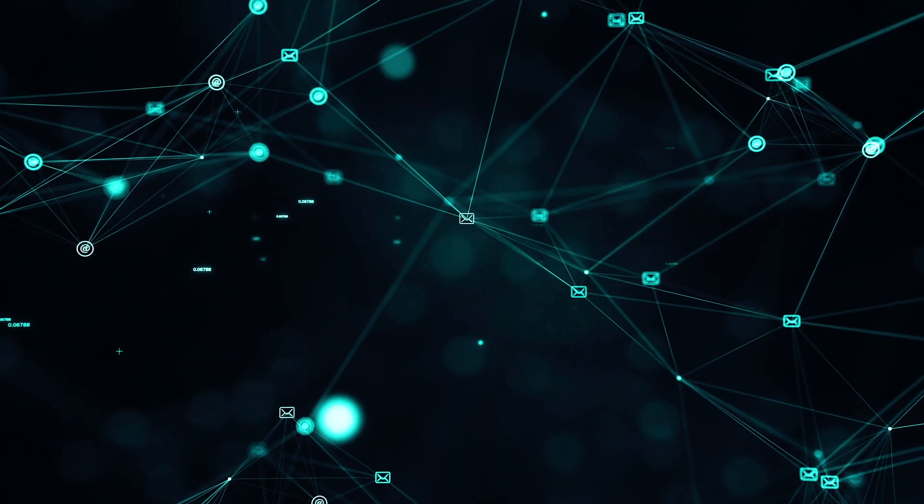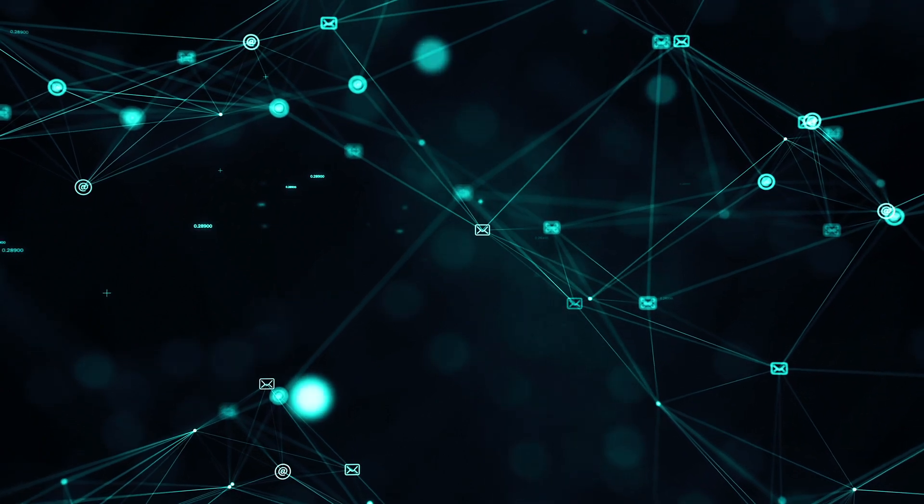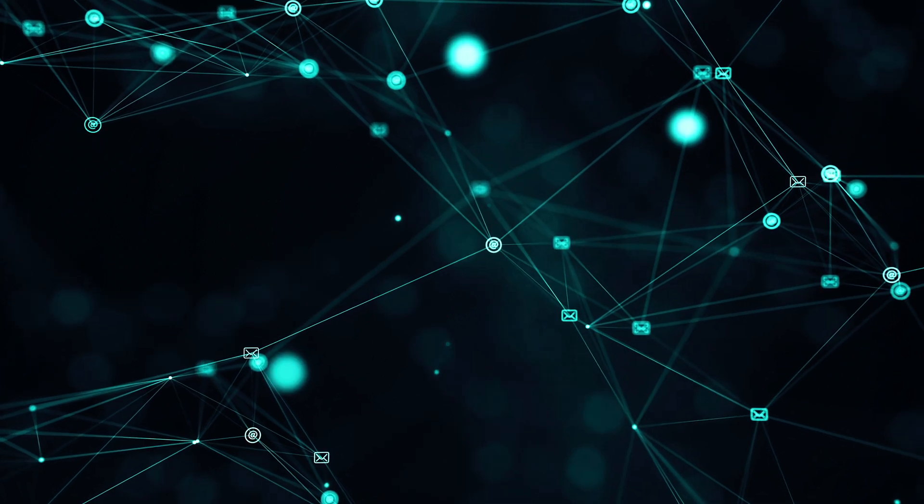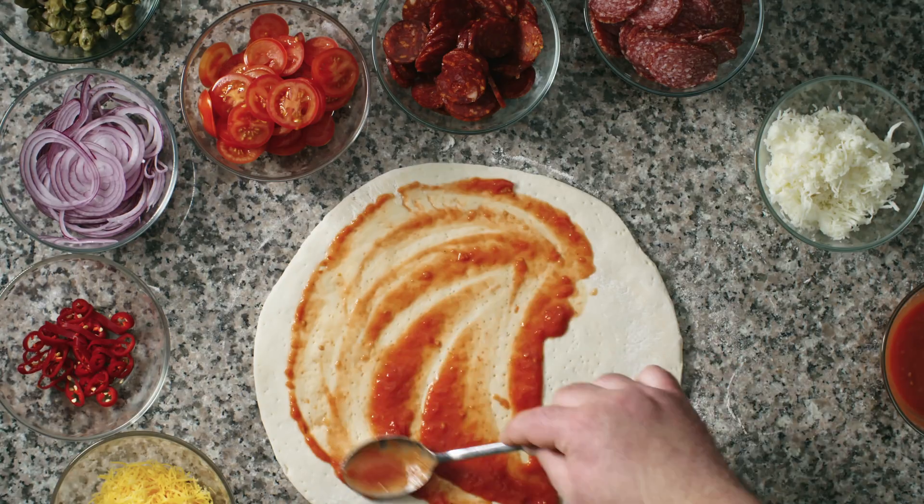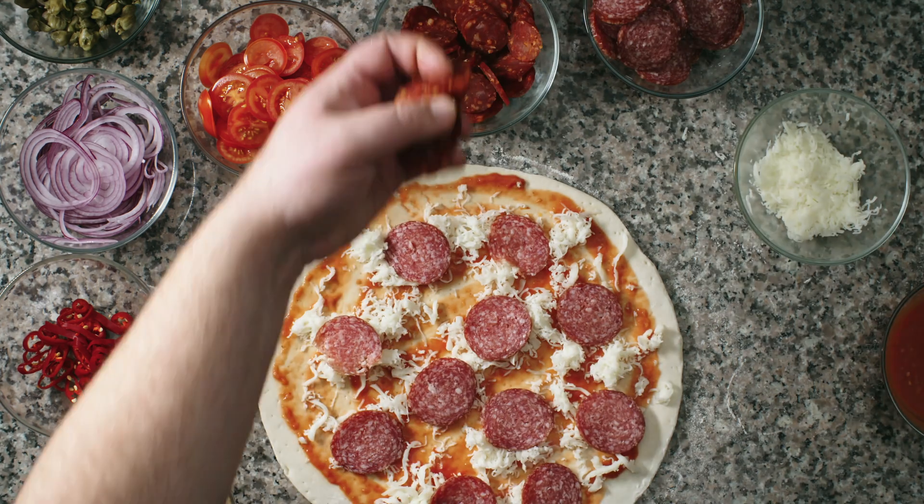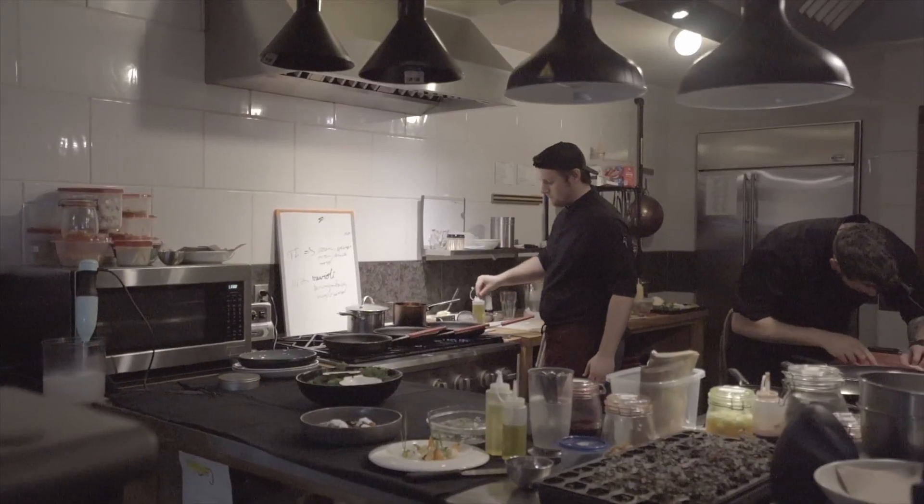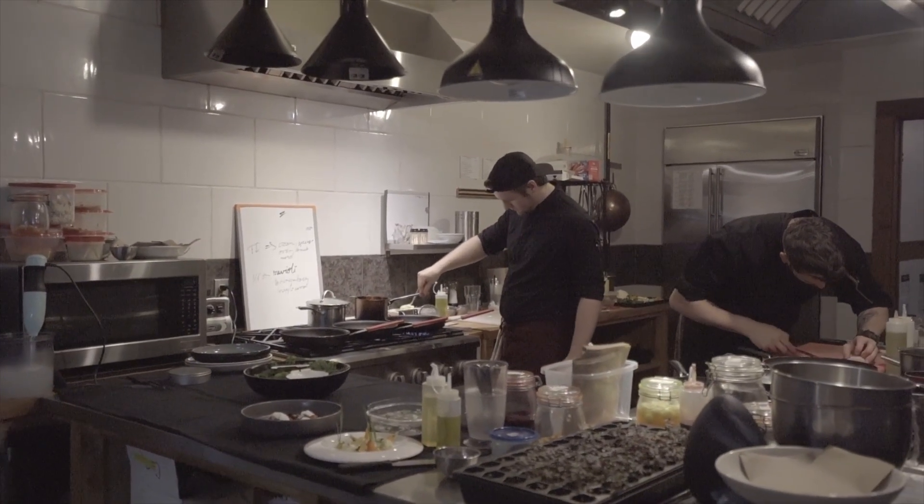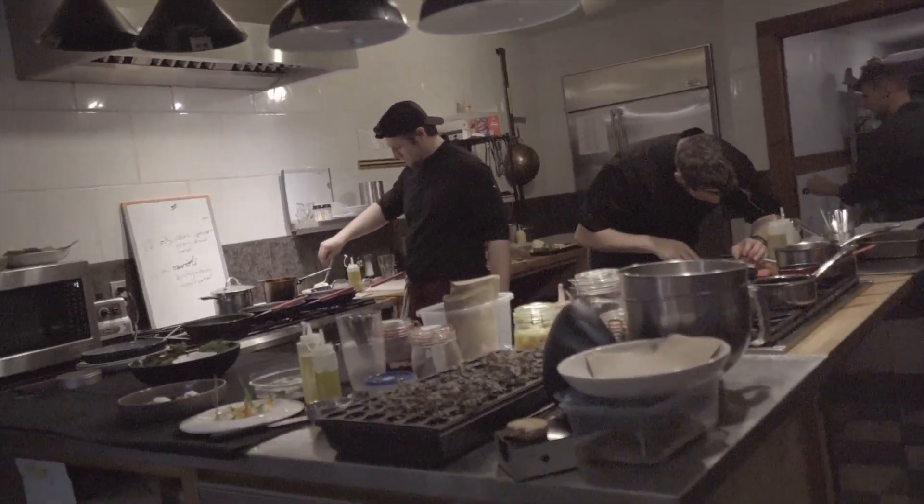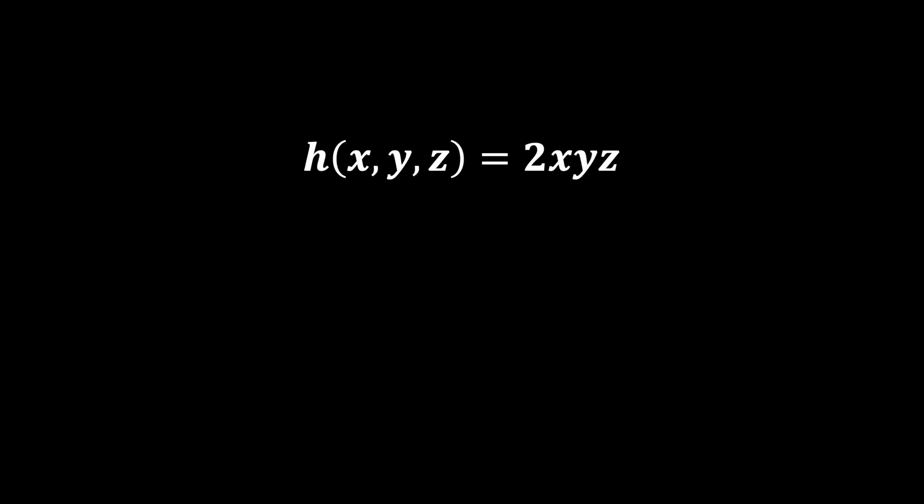Partial differentiation allows us to isolate and identify the pure effects on the function from potential changes in any one of its variables by keeping the others constant. Imagine you're baking pizzas at your restaurant depending on two variables, the number of workers and the number of ovens. You will need to understand how changing the number of either workers or ovens while keeping the other constant affects your baking capacity of pizzas. This is where partial differentiation comes into play.